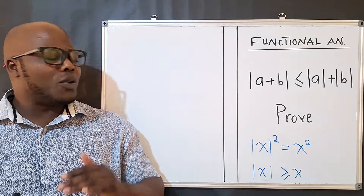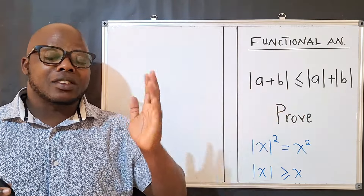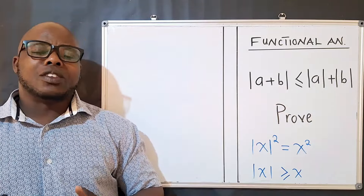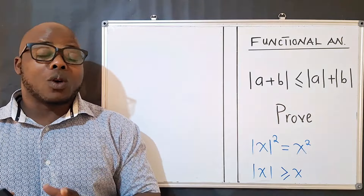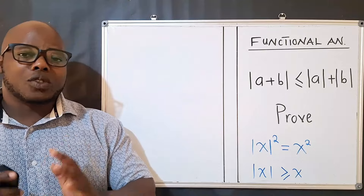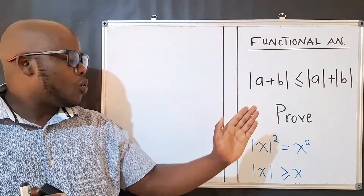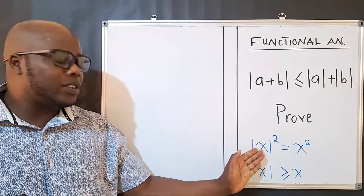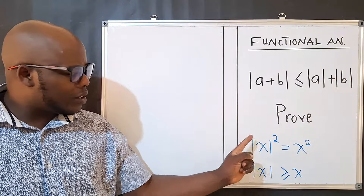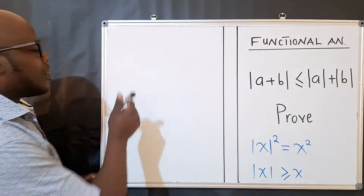How do we prove this inequality, and what is the name of it? This is the Triangle Inequality. In order to prove it, we need to understand two properties, so let's start with the first property.